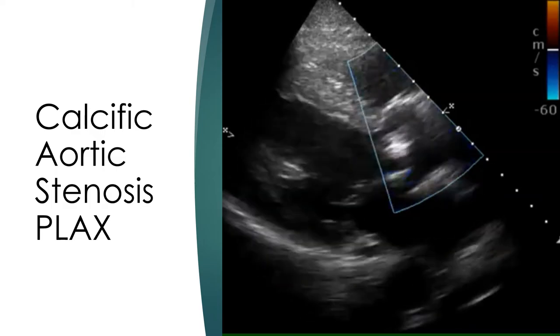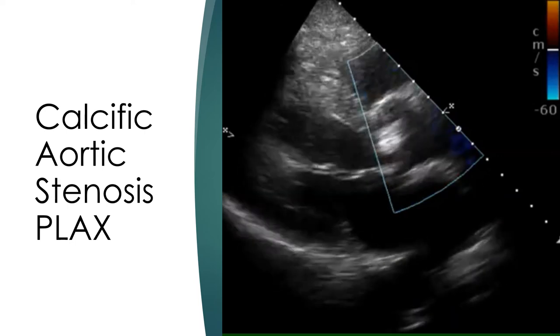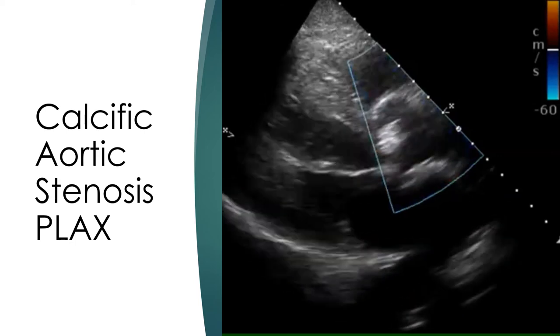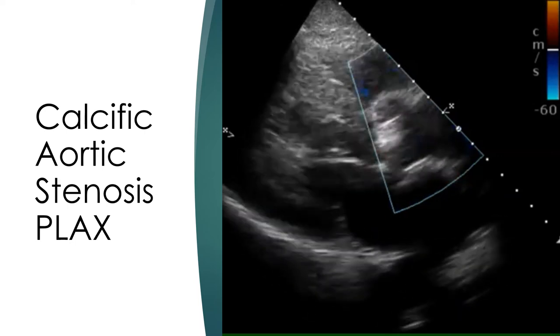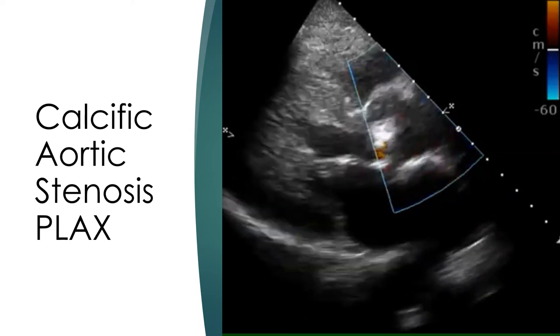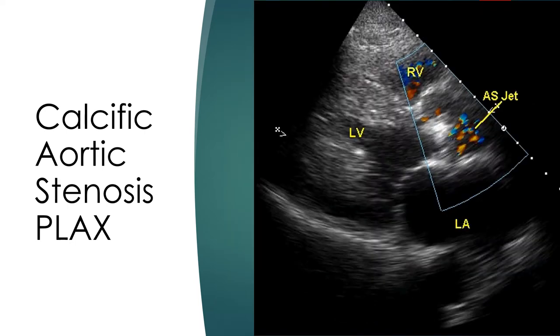Note that the left ventricular cavity is quite small in systole due to hypertrophy. Still image from parasternal long axis view with color Doppler showing the aliased jet beyond the domed and densely calcified aortic valve.